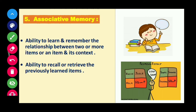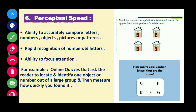Sixth is perceptual speed. Perceptual comes from perception — we perceive things through our five senses and form an understanding of them. This ability involves accurately comparing letters, numbers, objects, pictures, and patterns. It measures how accurately and quickly an individual can recognize and identify stimuli, and also reflects how focused and attentive an individual is.